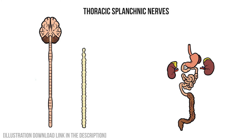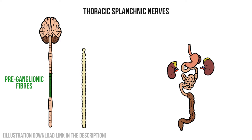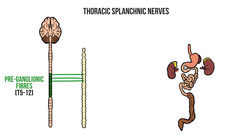The thoracic splanchnics do something slightly different. They start off the same, with preganglionic fibres from T5 to T12 leaving the spinal cord and entering the sympathetic chain. However, these fibres don't synapse inside the sympathetic ganglia. Instead they leave the chain and make their way towards the abdomen, coming together to form our three splanchnic nerves.